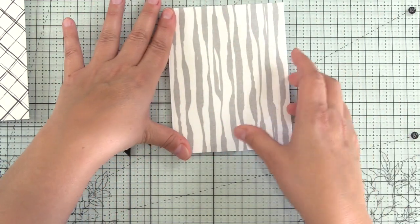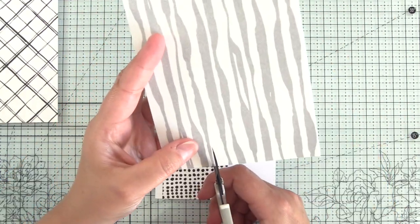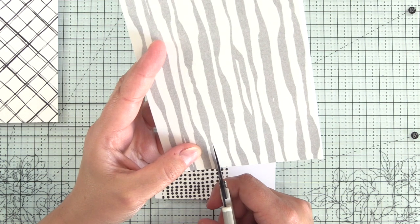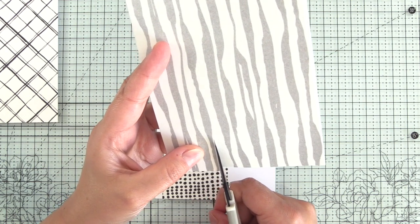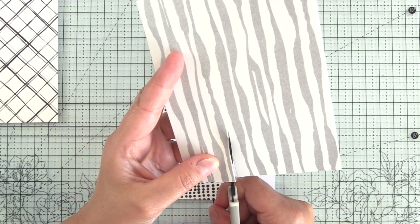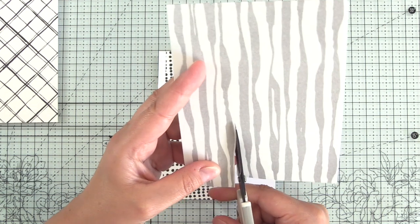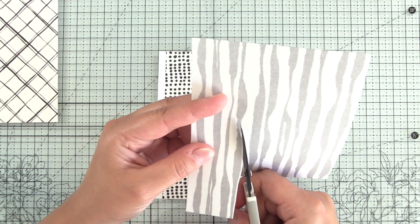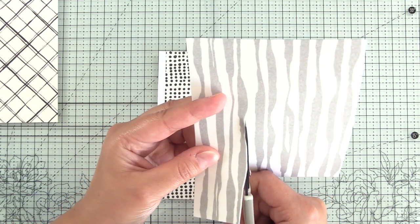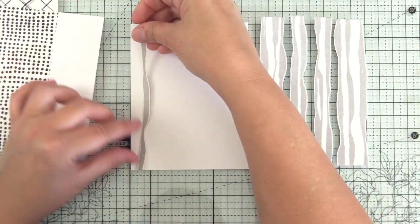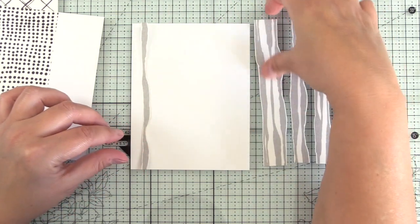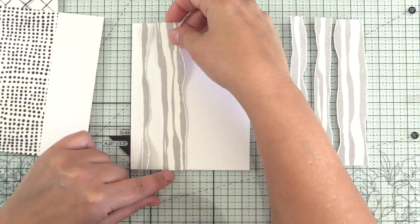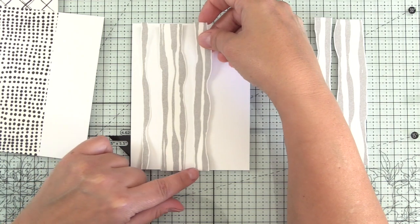And then what I decided to do with this is actually fussy cut some of these strips. So I did single lines, three lines together, a group of two lines together, a few more single lines and kind of just fussy cut different groupings of them because I wanted to pop this up on a card front. So after I got everything cut out, I'll line it up on the card front. And once I get it on, I really liked the look of this with it, just the white.